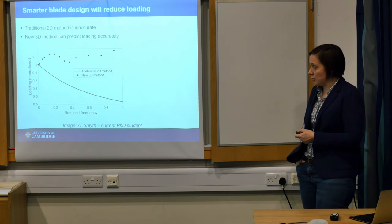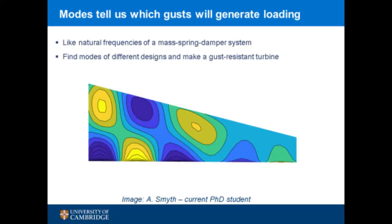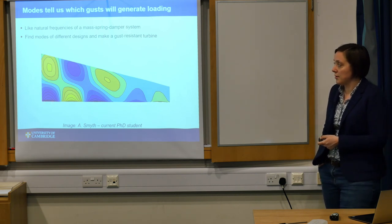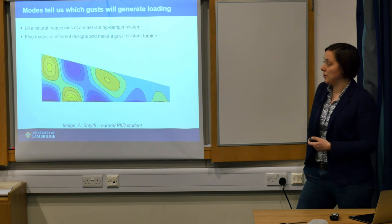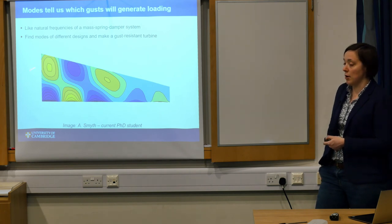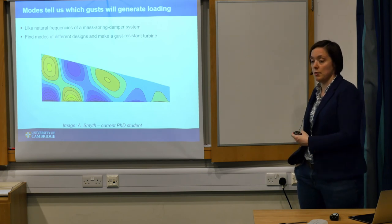By being more than 20% better at predicting the loading, we can be more than an order of magnitude better at predicting fatigue life. We can also turn the problem inside out: instead of just taking a magic number for loading, we can look at the modes of the blades — like a mass-spring-damper system or an organ pipe resonating at a certain frequency, but in 3D for a tidal turbine blade. If the gust shape matches a blade mode, the turbine responds very strongly. The next step is to play with design parameters so those modes don't match the shape of gusts found in the sea, giving a flat response.